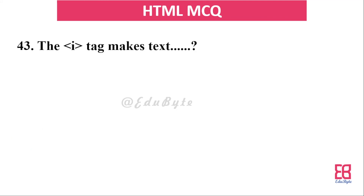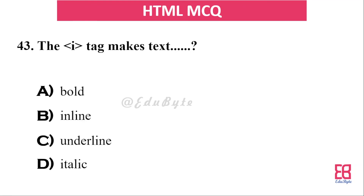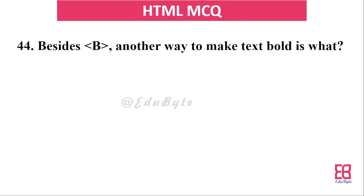Question thirty-nine: what does the `<i>` tag do? The `<i>` tag makes text italic. The options include bold, italic, underline. The correct answer is italic — the `<i>` tag makes text italic.